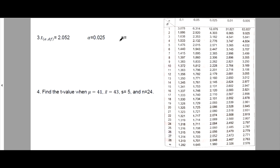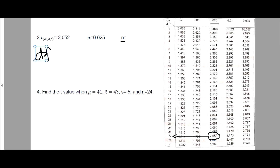Example 3: Find the sample size n, given alpha equals 0.025 and T-value equals 2.052. On the column for alpha 0.025, we locate the value 2.052. The corresponding degrees of freedom is 27. Therefore, n equals df plus 1 equals 27 plus 1, so the sample size is 28.